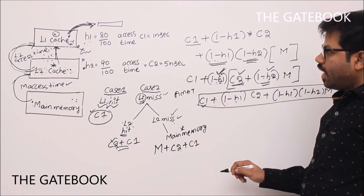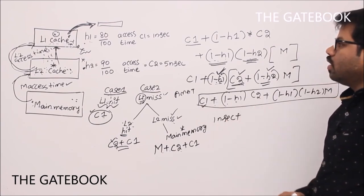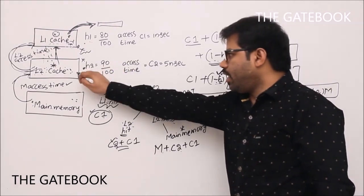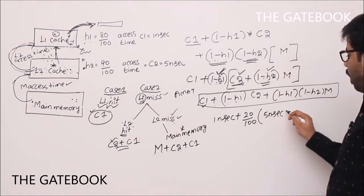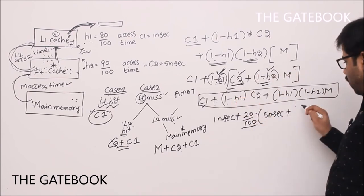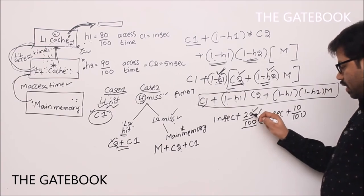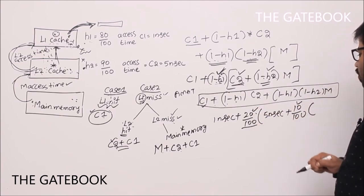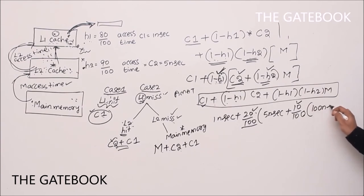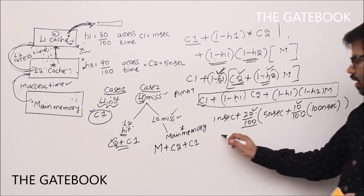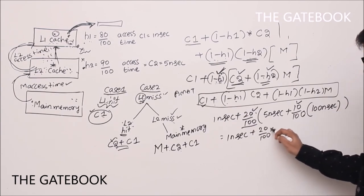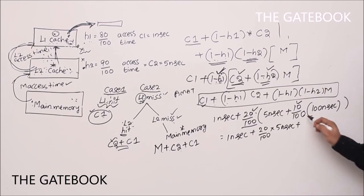Let's solve a numerical problem. C1 = 1 nanosecond. The remaining 20% of the time we miss L1, and we definitely access L2 at 5 nanoseconds. Plus, in those L1-miss cases, L2 misses 10% of the time, and we access main memory at 100 nanoseconds. So: 1 + (20/100)×5 + (20/100)×(10/100)×100.